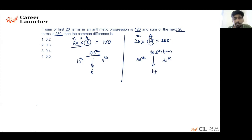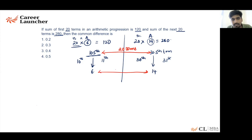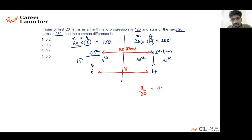Now we know the 10.5th term is 6 and the 30.5th term is 14. The difference between them spans 20 terms, and the value difference is 8. Therefore, the common difference is the total difference divided by the number of terms: 8 ÷ 20 = 0.4. The common difference of this arithmetic progression is 0.4.